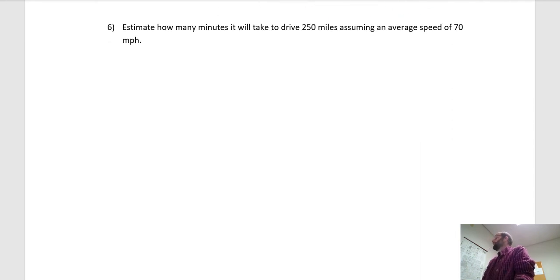Six. Estimate how many minutes it'll take to drive 250 miles, assuming 70 miles per hour. So that's 70 mile per hour. That's your speed, which is distance over time. 250 miles is your distance, and then solve that for T. And you're going to get a number. It's going to be a decimal, and that's going to be in hours. And then it's just a unit conversion to calculate, to move it over to minutes.